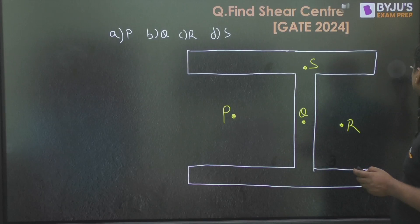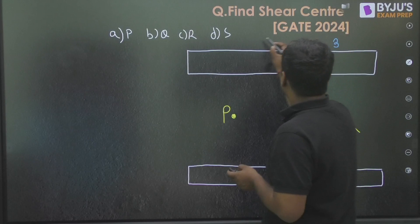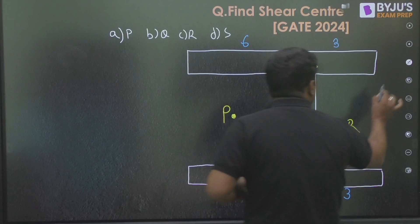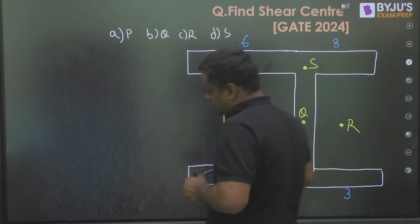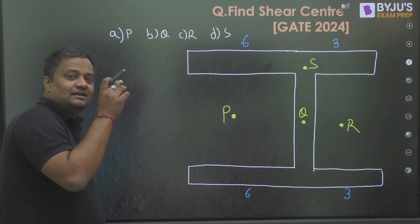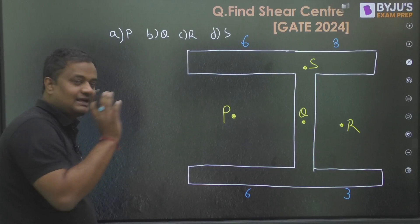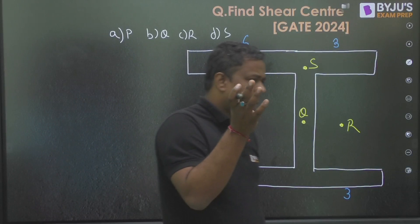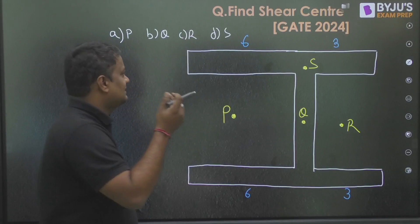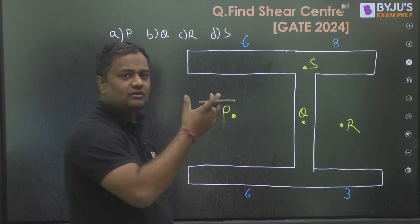This section is not symmetrical. This part is 3 cm and this is 6 cm. Most students have found the shear center only for symmetrical sections, or they remembered the values for channel section, open slit, or a couple of others — but not like this. The question did not ask the distance of the shear center but at what point — P, Q, R, or S — the shear center lies. More than 99% of students were not able to solve this question.